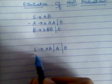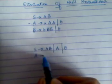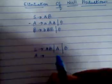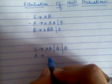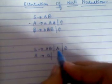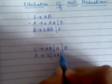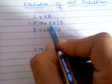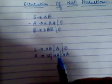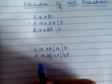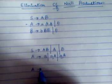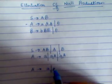Now let us consider the production A gives AA. Both of these A's are nullable. So we can write: first AA — nullifying the second A, giving just A; and again AA — nullifying the first A, giving just A. But these two are the same, so we simplify. The A production becomes A gives AA or A.